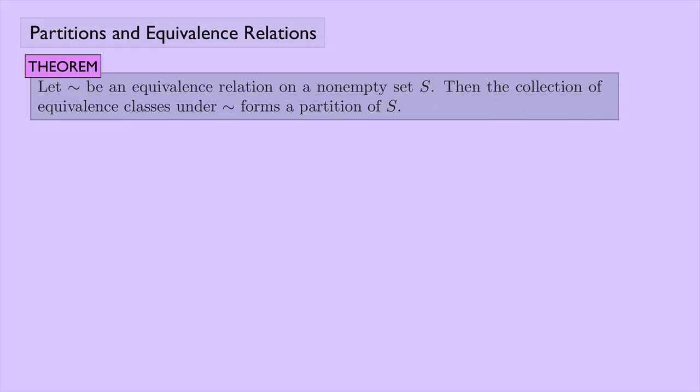Later on, we'll go the other way around and show how a partition determines an equivalence relation. But first, let's prove this. If we're going to show that something forms a partition, we need to show two things: we need to show that the set is the union of all the different cells of the partition, and we also need to show that any two cells are either the same or disjoint. So let tilde be our equivalence relation on the set S, and let X be an element of S.